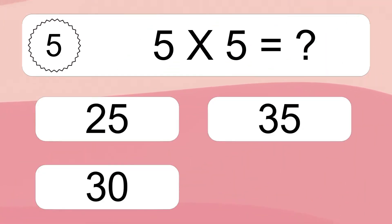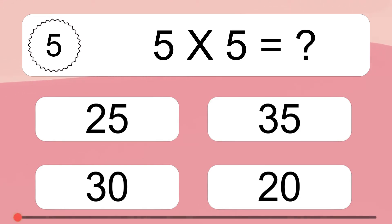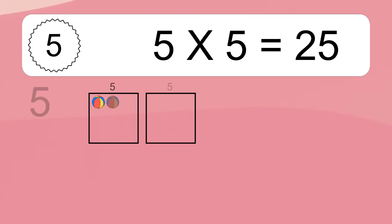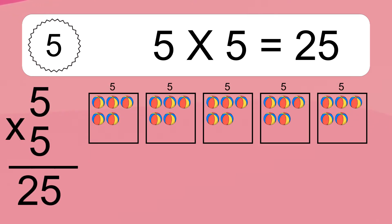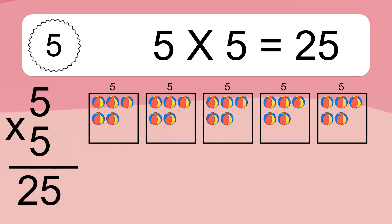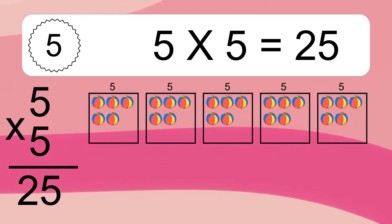Five times five equals what? Five times five equals twenty-five. We have five boxes, and each box has five colorful balls inside. If you count all the balls in all the boxes together, you will have five times five balls. This equals twenty-five balls.